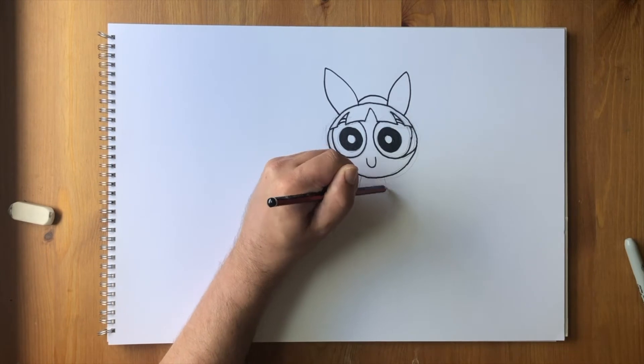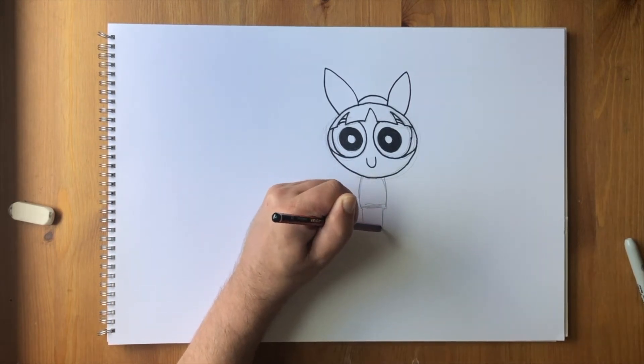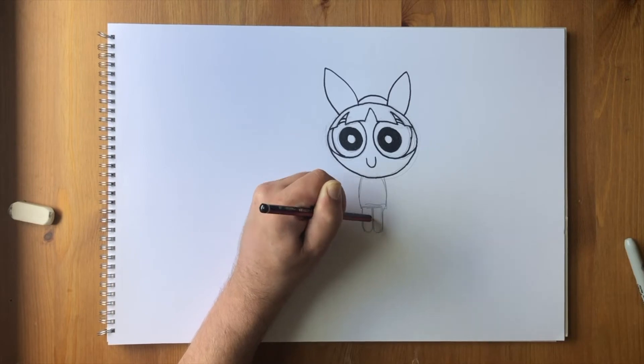Back with a pencil for Blossom's body, but you can stick to the marker pen if that's better for you. Her body is quite short and thin. Two legs poke out like lollipop sticks and then an arm hanging down either side of her body.